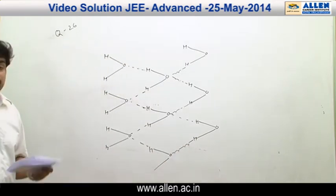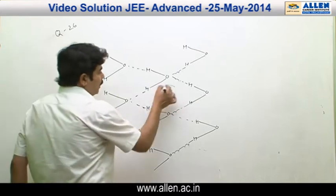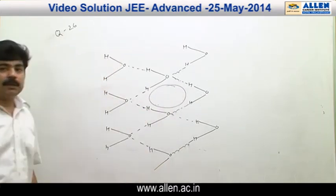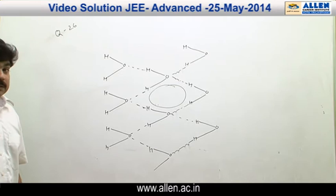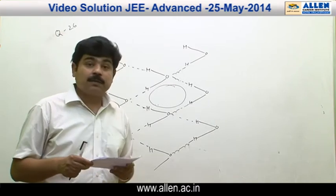Ice has an open cage-like structure and there are a number of voids, big voids present in ice. Therefore, the density of ice is less than water and therefore it floats over water. That is, option one is correct.